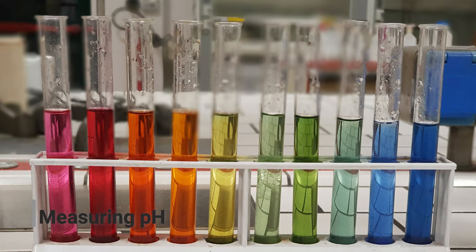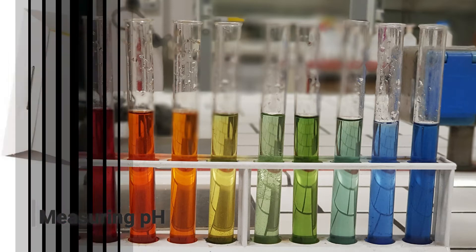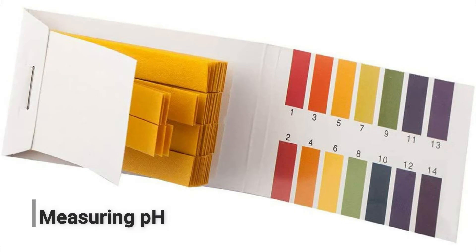We use different pH testers to measure pH, which can be in the form of indicator papers or digital testers. In the case of paper indicator strips, they work on the principle of coloration, where substances such as litmus, which covers the paper strip, react with the liquid in which we have inserted it. The paper strips can be compared to a color scale on which we can accurately determine the pH value.